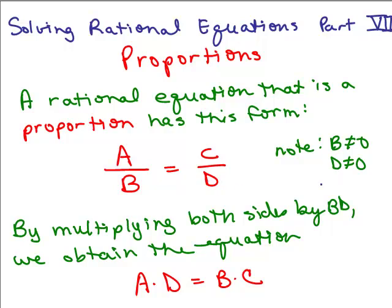So neither B nor D can be 0, and we found out when you multiply both sides by BD, which was the least common denominator, you get this equation AD equals BC. Basically you're multiplying the numerator of one times the denominator of the other.